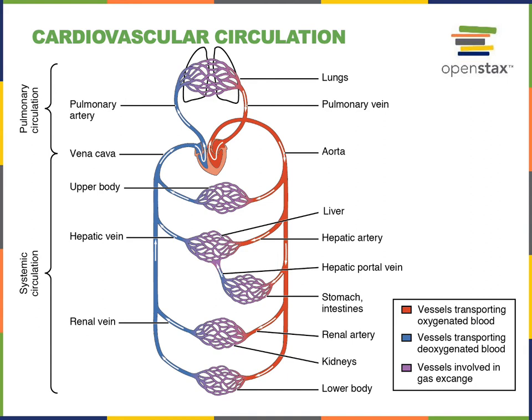These medium-sized arteries are known as muscular arteries. For example, there's a brachial artery that carries blood through your arm — an example of a muscular artery. On the diagram, we see the hepatic artery as an example of a muscular artery distributing blood to the liver, and the renal arteries are muscular arteries that deliver blood to the kidneys.